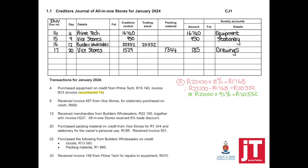On day 25: purchase the following from Builders Wholesalers on credit — again two items from the same supplier. Source document renumbered as number 18, day 25, from Builders Wholesalers. We start with trading stock first, then packing material. Goods are shown as trading stock and packing material. In total we owe 14,920.